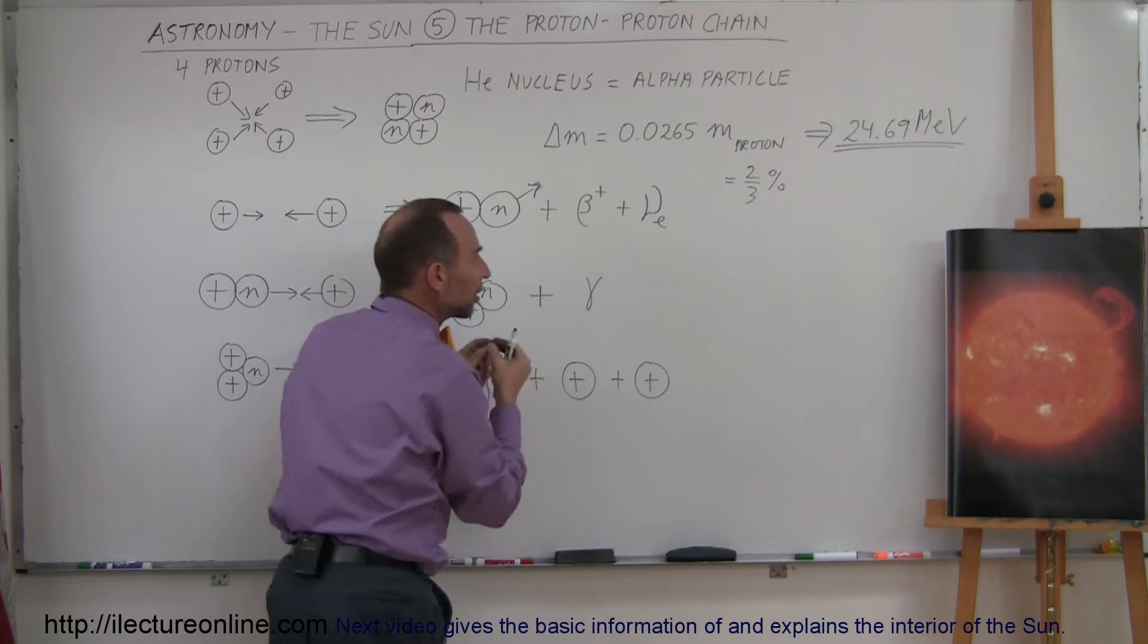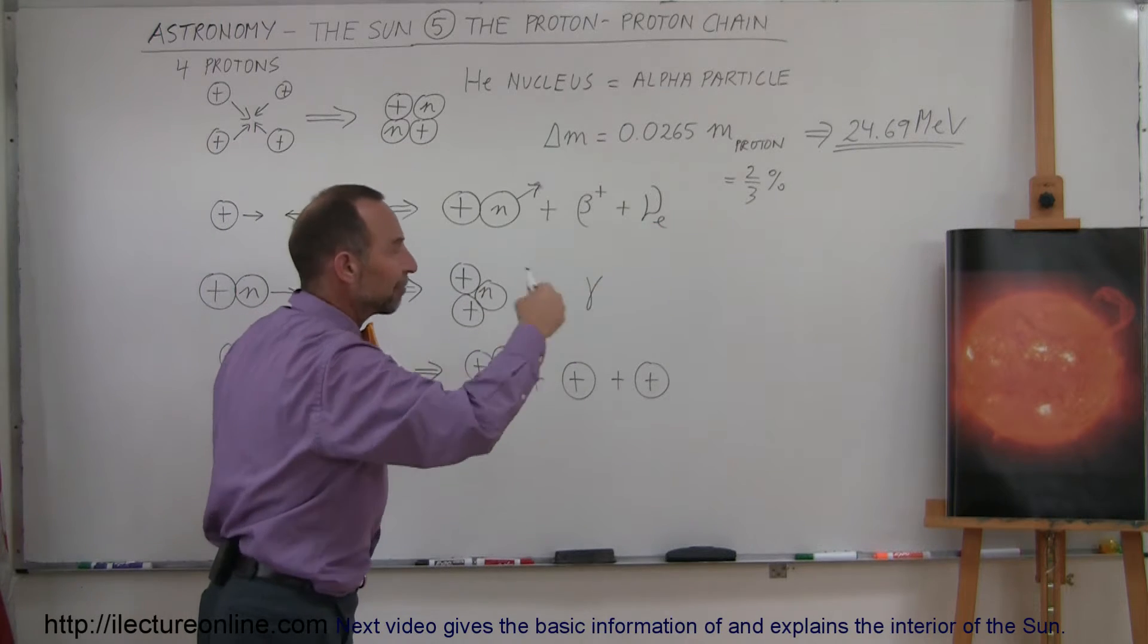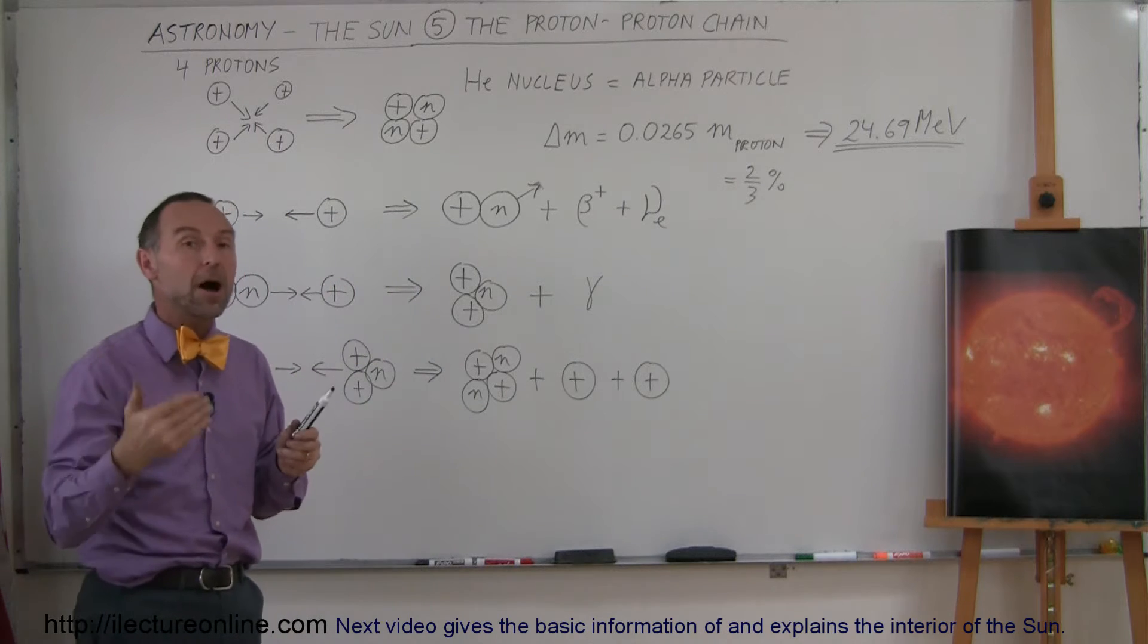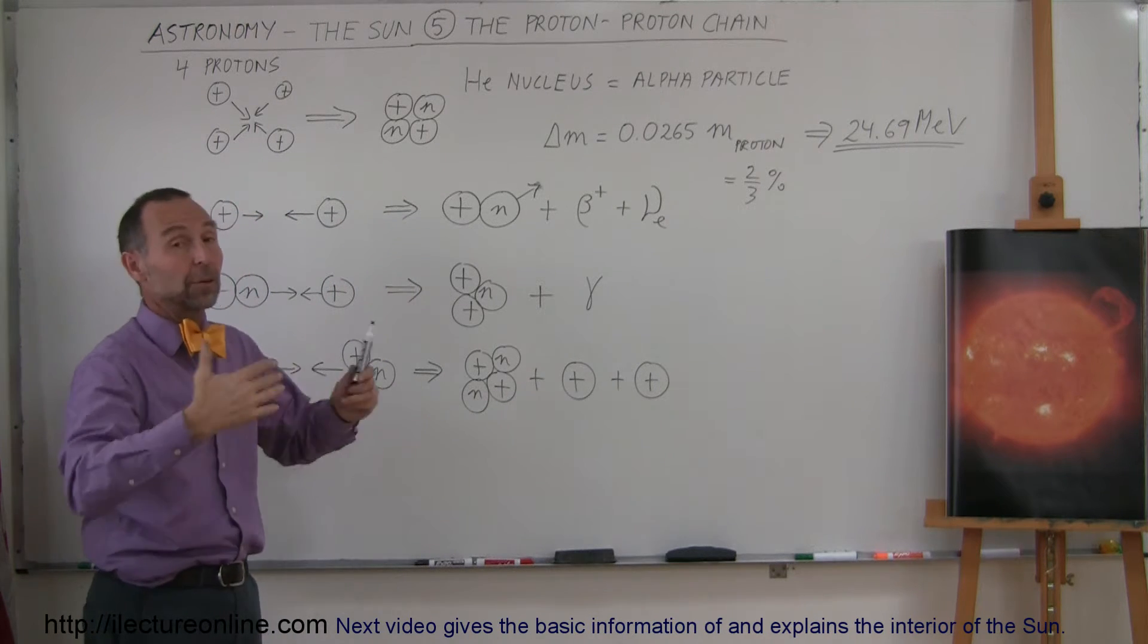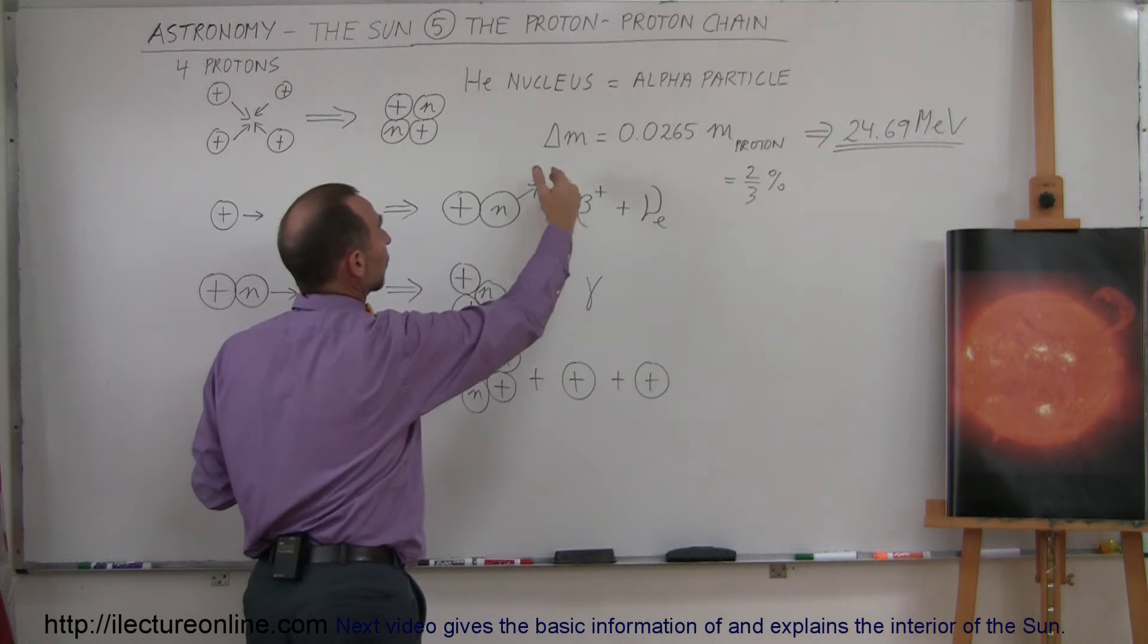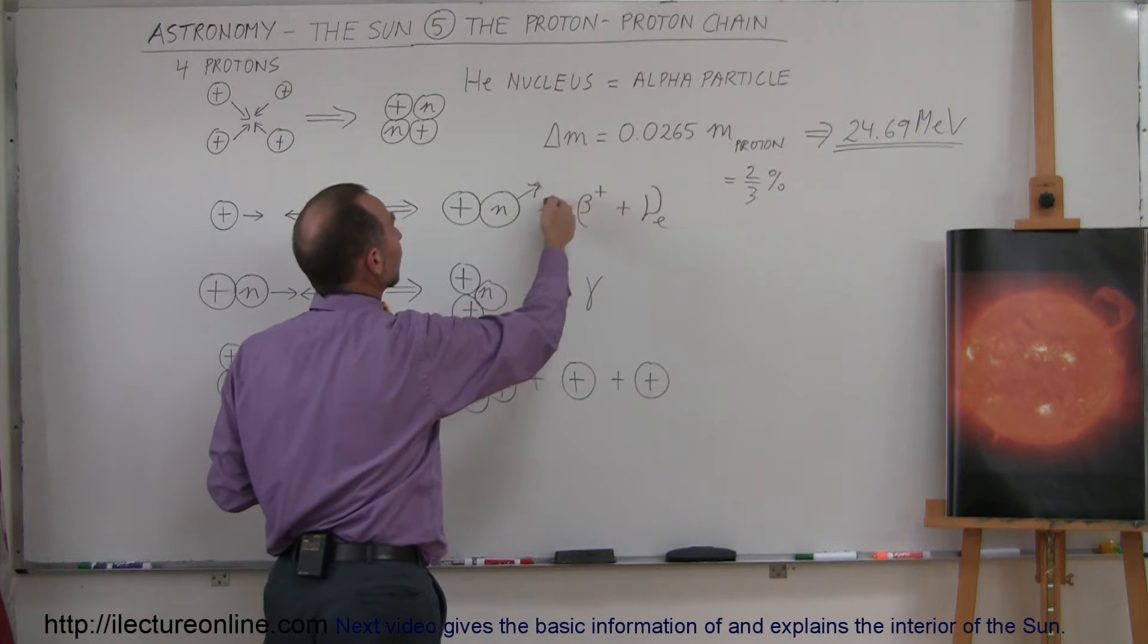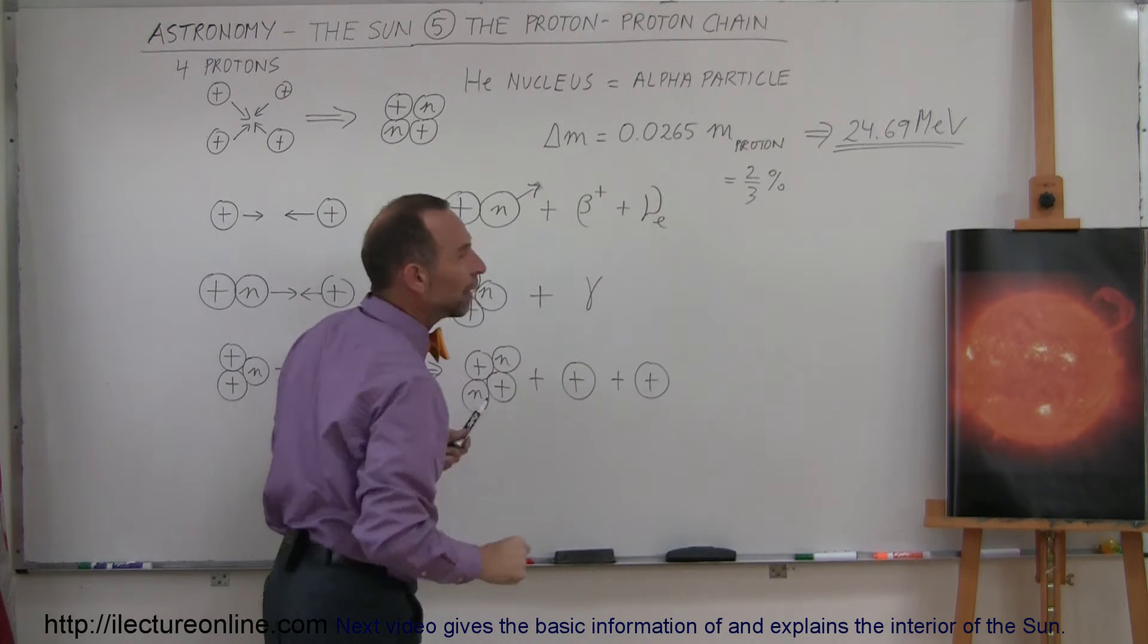So a beta particle actually comes out of the nucleus really fast at very high velocities. A beta particle is actually a positive electron, which is the anti-electron of the negative electron that we're so used to here. So a beta particle is simply an electron with a positive charge. It gets ejected from the nucleus, taking away the positive charge and therefore taking a proton and turning it into a neutron by ejecting this beta particle.